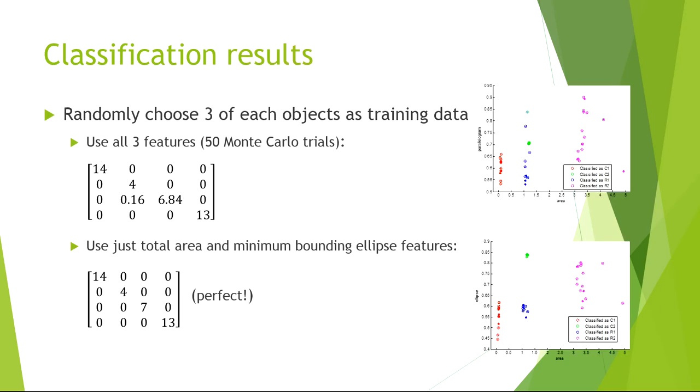If all features are chosen, then we get this confusion matrix. Whereas if only the total area and the minimum bounding ellipse features are chosen, we get a perfect result.